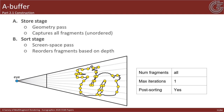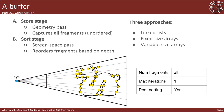The A-buffer construction requires two stages. First, a store stage that captures all fragments in one iteration as an unsorted sequence. Second, a sorting stage where fragments are sorted according to their depth. The A-buffer can be implemented either as a linked list, a fixed-size array, or a variable-size array, each of which will be discussed in turn.